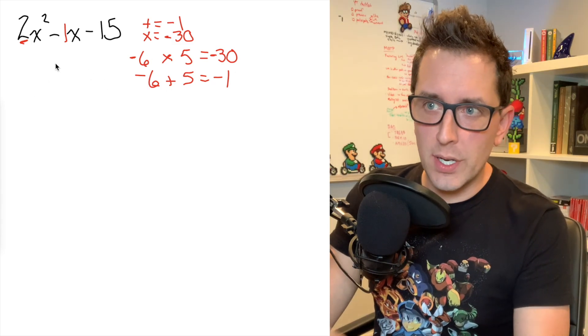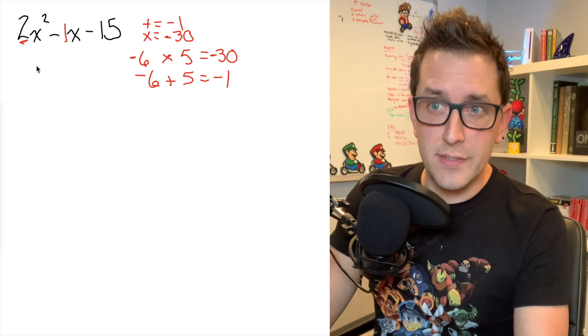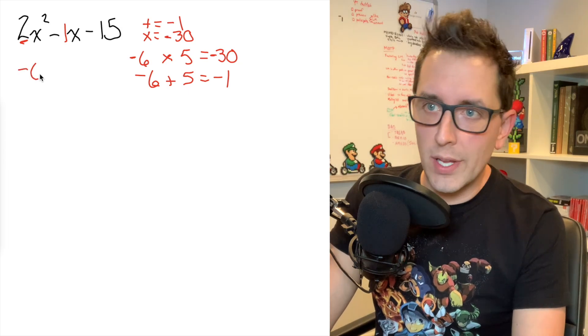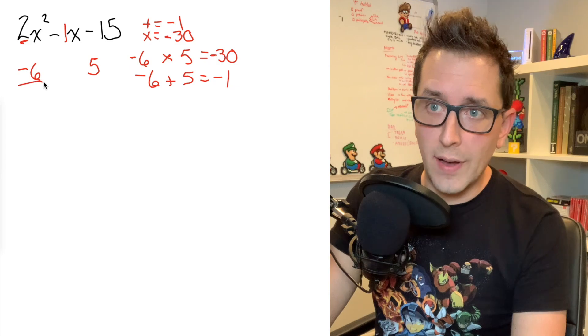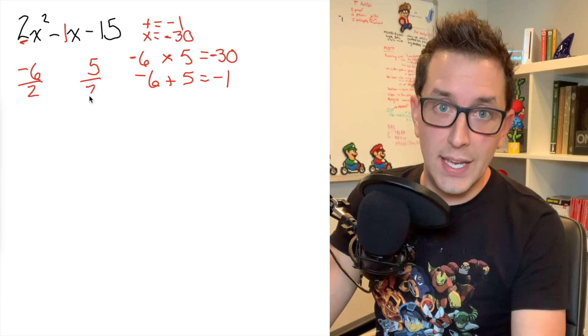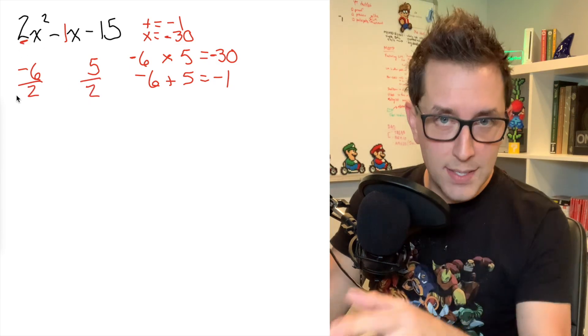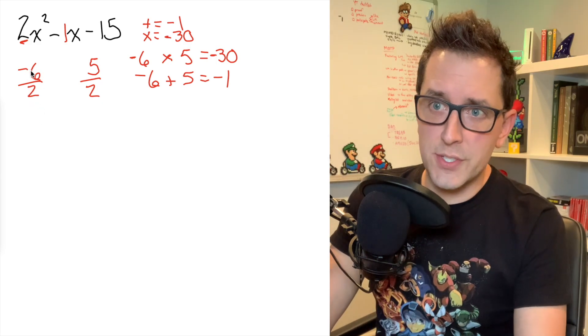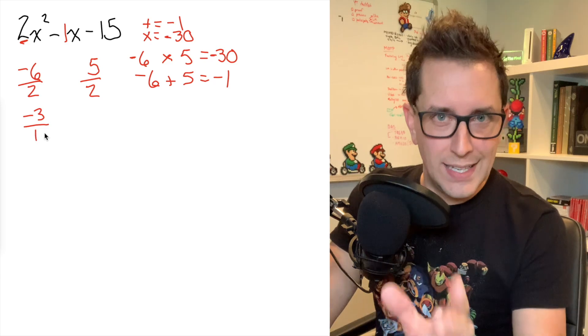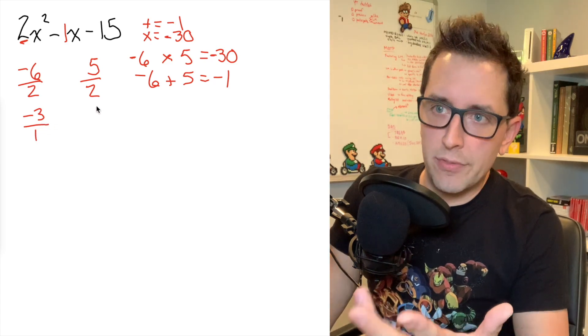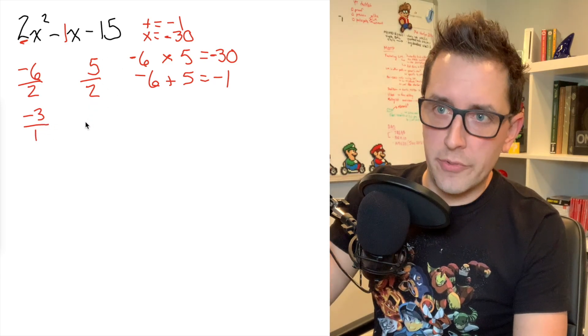So remember with this strategy, we're going to take those two numbers that we found negative six and five, and just write them on your page, wherever you have space. I'm just going to put them underneath the trinomial and I'm going to randomly divide them by the value of a, which in this case is two. And remember, we want to simplify our fractions by reducing to lowest terms, negative six over two, that's just negative three, but I'm going to write a one on the bottom because I need a denominator for this trick and five over two, that's already reduced to lowest terms.